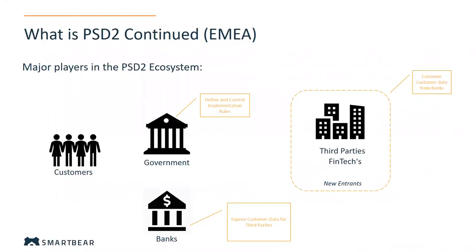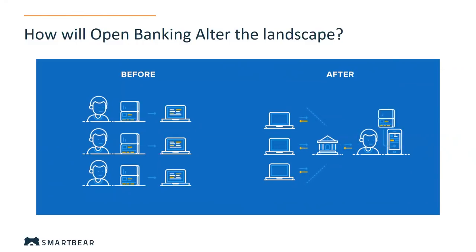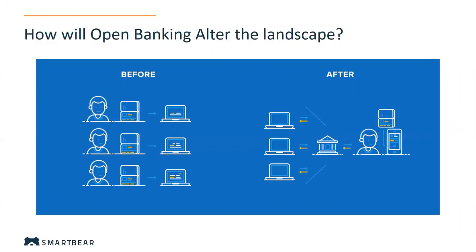To summarize: the government is defining and controlling the implementation rules, the banks have all this data already from years and years of people using their services. Now these third-party fintechs are coming in — seeing that this big data set is already there and that banks perhaps aren't using it innovatively enough — thinking, 'The information is there, why not use APIs? We can build our own services and products to benefit customers.' This is a more open and choice-driven environment compared to before, where customers were tied into whatever services their bank offered.